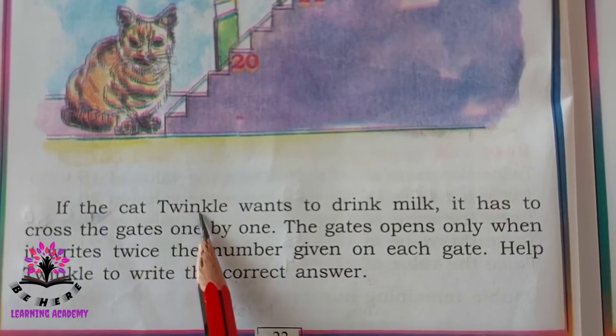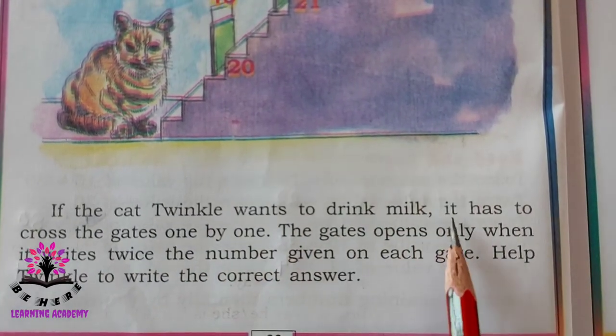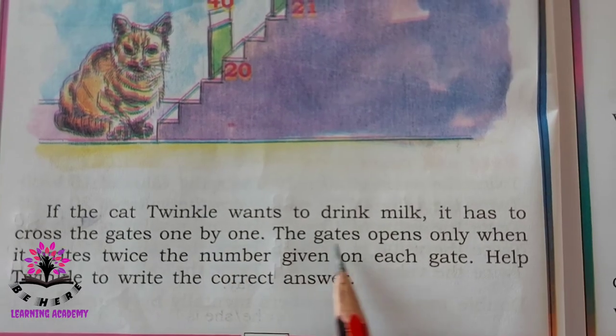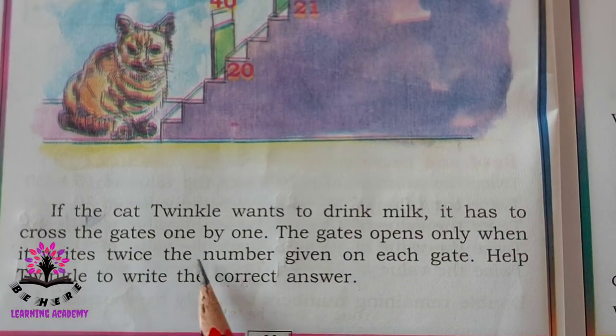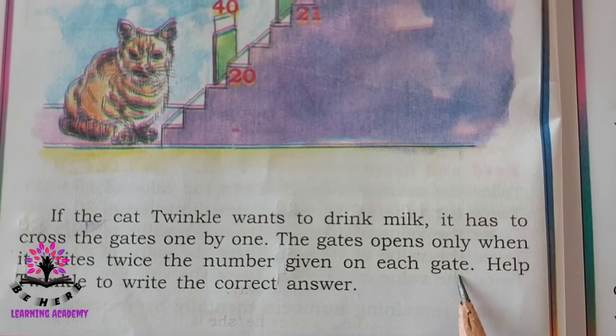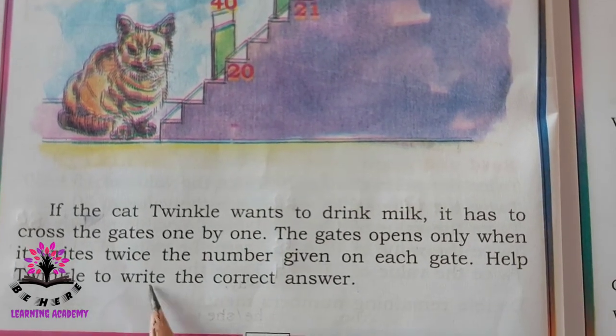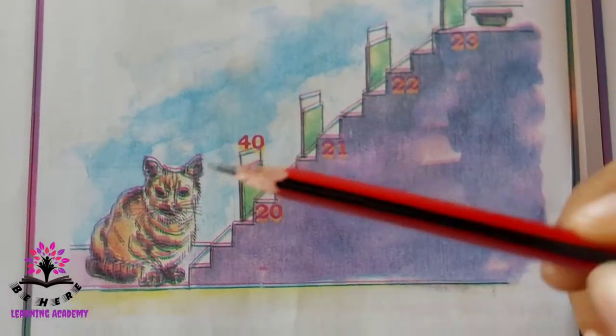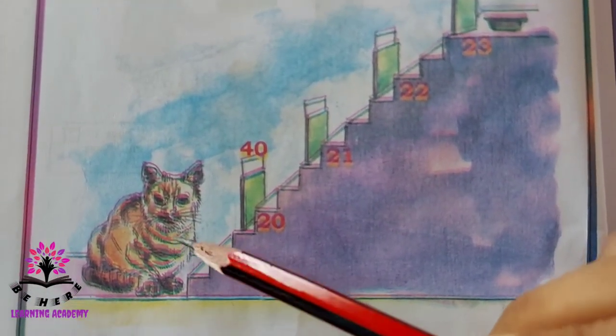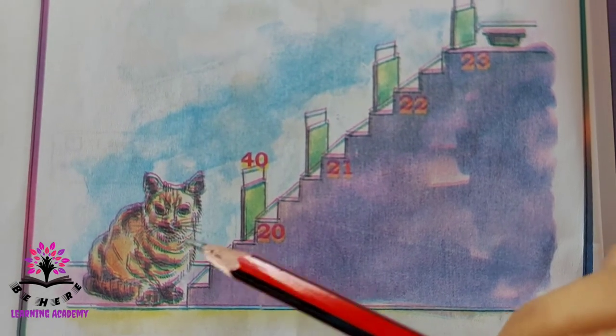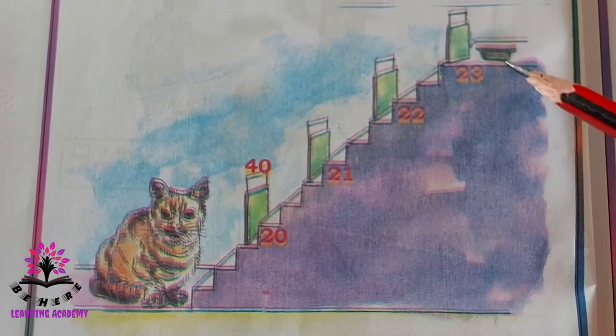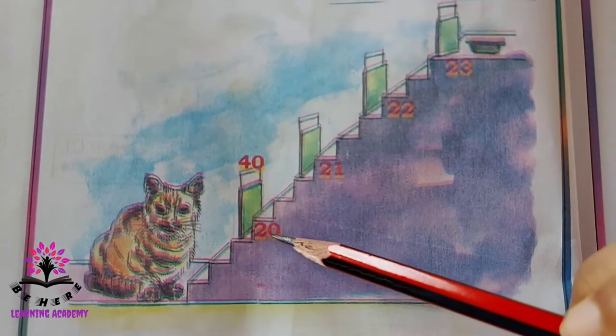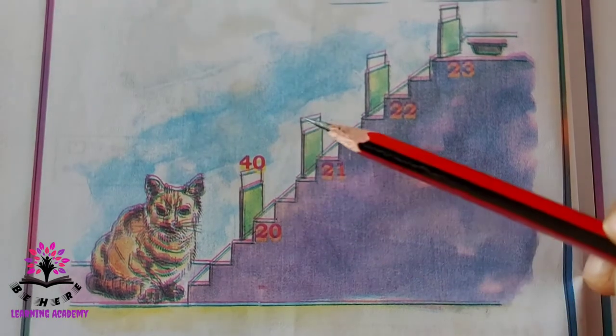If the cat Twinkle wants to drink milk it has to cross the gate one by one. The gate opens only when it writes twice the number given on each gate. Help Twinkle to write the correct answer. Now you see here so Twinkle is the cat here and the cat wants to drink the milk. Milk is here. If that cat has to drink the milk then the cat must double the number given below and write here.